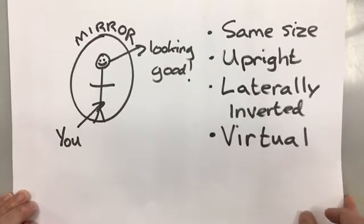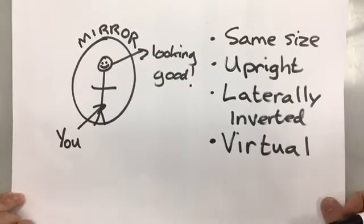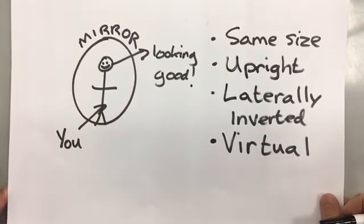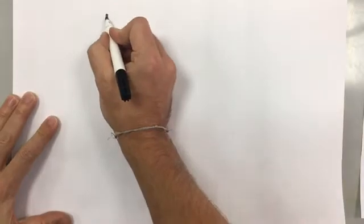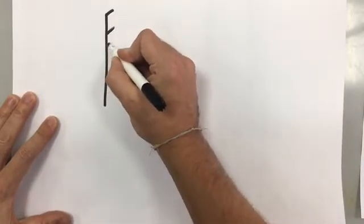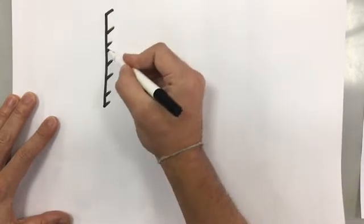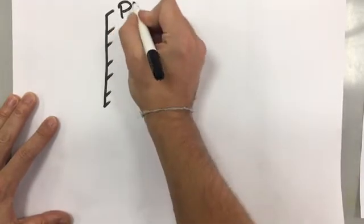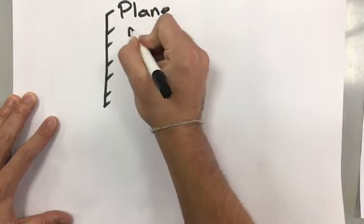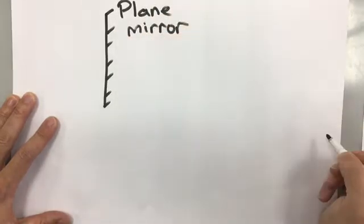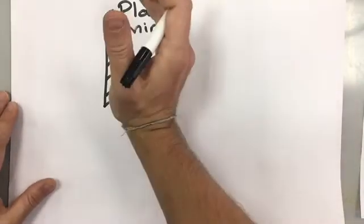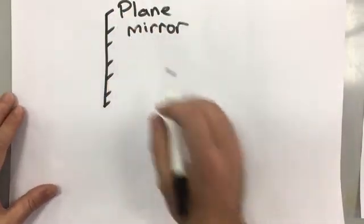We can look at this in the form of a diagram. In this diagram we're going to look at a plane mirror. A plane mirror looks like a flat line with these dashed lines behind it. Plane means flat, so a flat mirror not curved, a plane flat mirror.